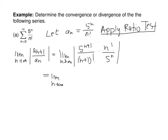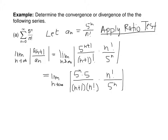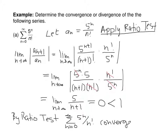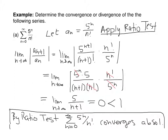After simplification, the 5^n's cancel and the n! factors cancel, leaving the limit as n goes to infinity of 5 over (n+1), which equals 0, which is less than 1. So by the ratio test, the sum from n equals 0 to infinity of 5^n over n! converges absolutely. Absolute convergence is even better than plain convergence, so it is good to state that.